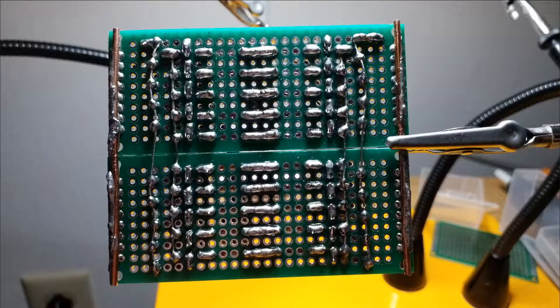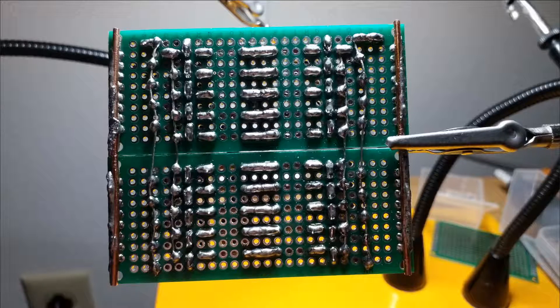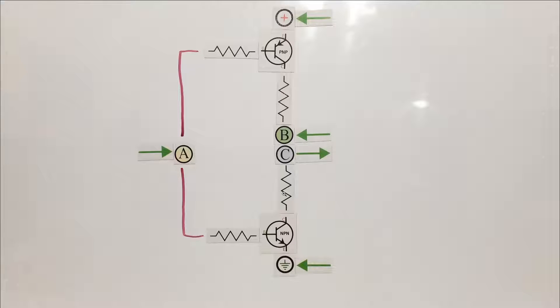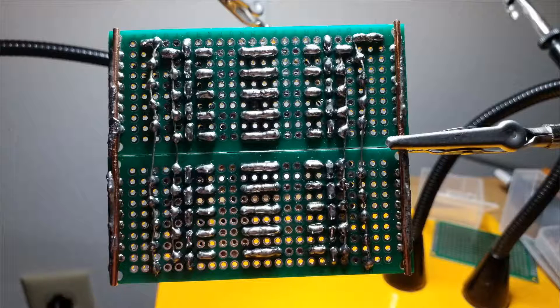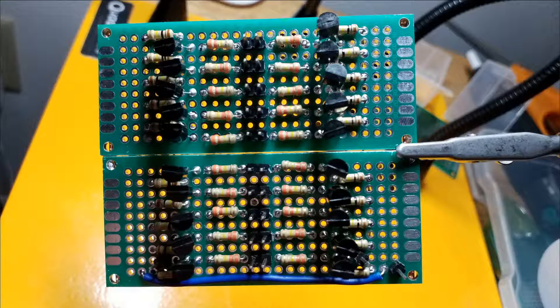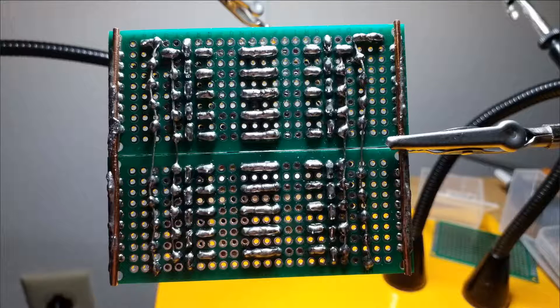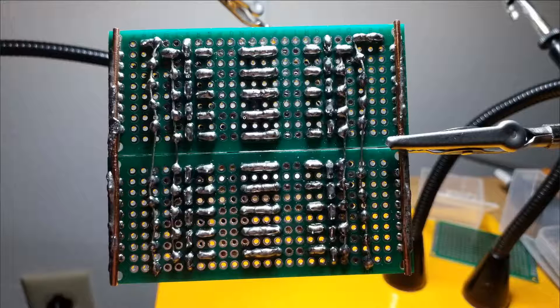So here the base resistors are connected to the bases. And then the collector resistors, which are the pull up and pull down ones, are connected across. And then you've got the resistor, the pin, the pin, and the resistor all connected in the middle. So it's all shorted together.